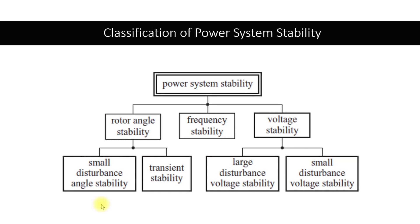Voltage stability is also of two types. In large disturbance voltage stability, the power system is subjected to a very strong disturbance, such as a three-phase fault or a single line-to-ground fault. Small disturbance voltage stability is where the system is subjected to a small variation in voltage, for example due to starting of a motor, tripping of load, or addition of a large load at the same time.